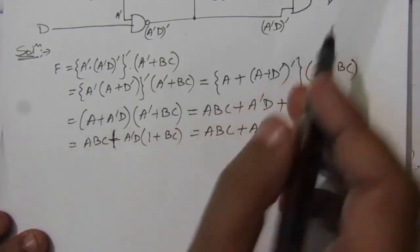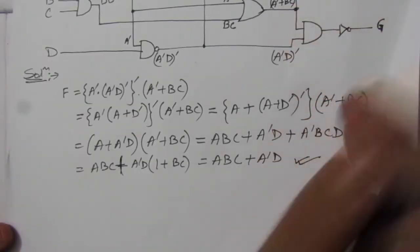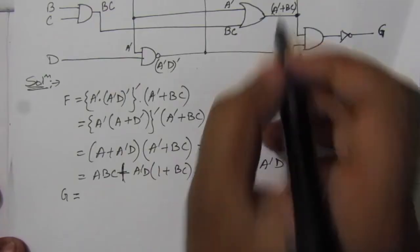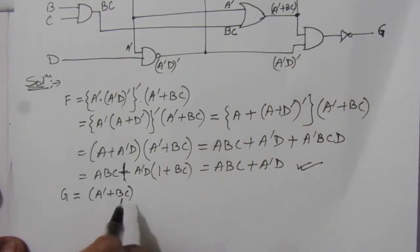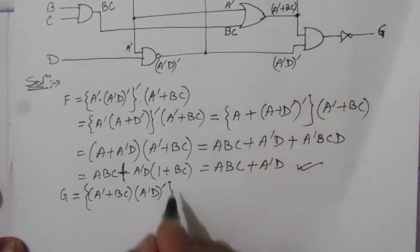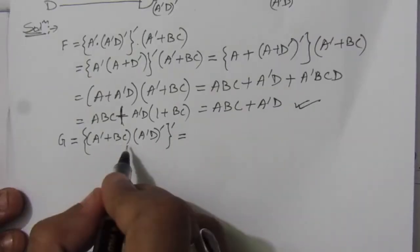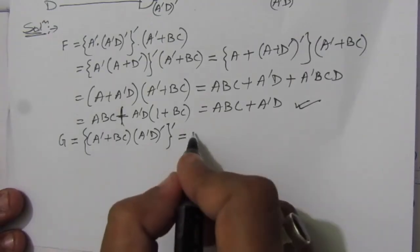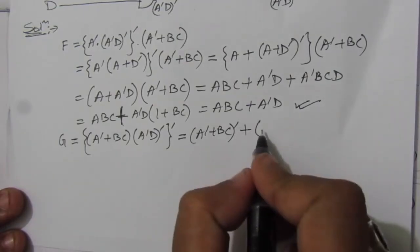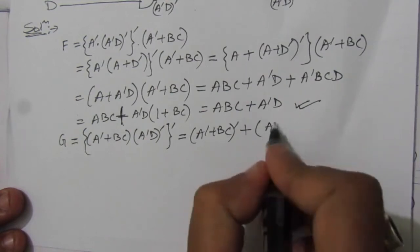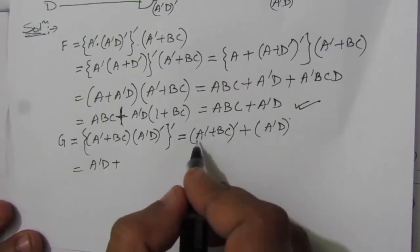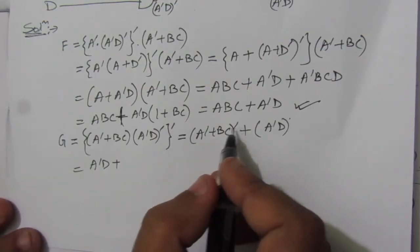Now we find output G. G is the product of the two terms (A-bar + B·C) and (A-bar · D)-bar, then complemented. This is in the form (A·B)-bar, so we write it as A-bar + B-bar. Applying De Morgan's: (A-bar + B·C)-bar + A-bar·D. The term (A-bar + B·C)-bar by De Morgan's gives A-bar-bar · (B·C)-bar = A · (B·C)-bar.